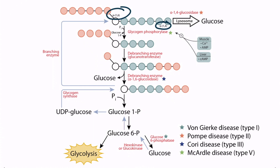Now let's focus on the pathway. From the figure, notice that the black arrows moving from the top of the image to the bottom represent glycogenolysis. The blue arrows, going in the reverse direction, represent glycogenesis. Notice also that next to the arrows are important enzymes, which you can see in red.